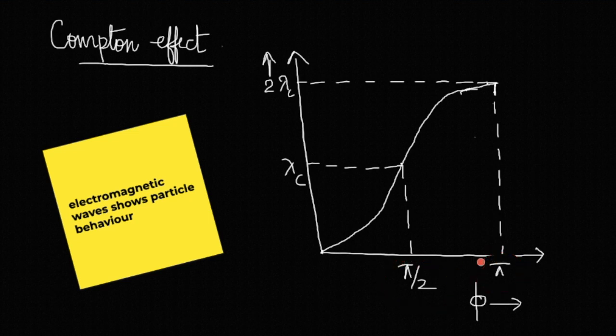This shows that we have seen the collision between a photon and an electron which is at rest, and it proves that electromagnetic waves show particle behavior. It's just like a collision between billiard balls. We had the idea that electromagnetic waves have wave nature only, but here you see that for this phenomenon to be possible, electromagnetic waves should behave as particles. This is excellent proof that electromagnetic waves show particle behavior as well.